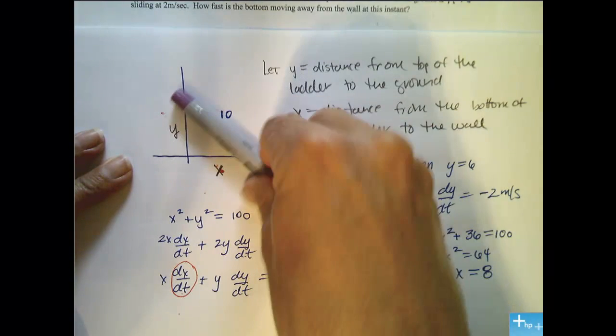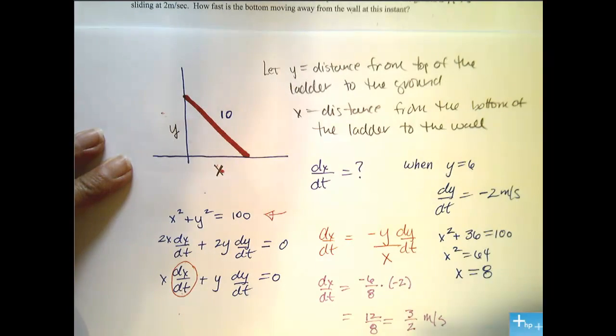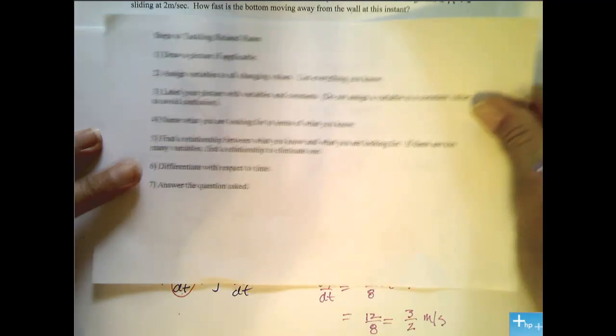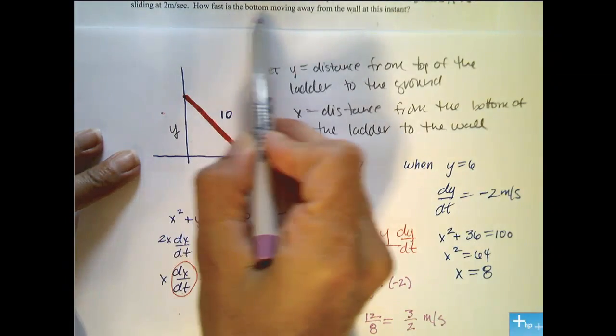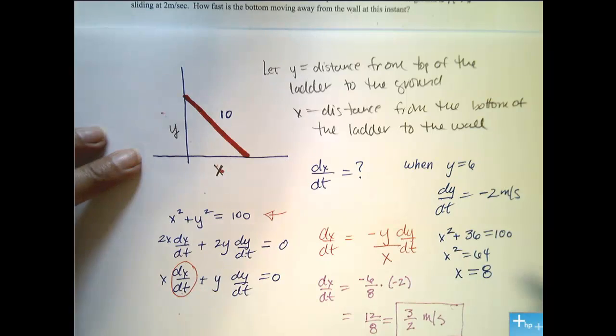Because, remember, x is getting bigger as y gets smaller. So, my last step is to make sure I answer the original question asked, which is, how fast is the bottom moving away from the wall at this instant? And here is my answer.